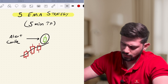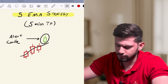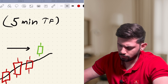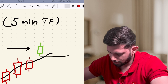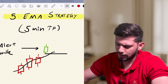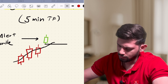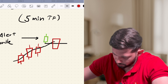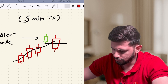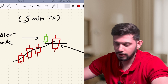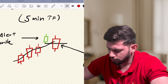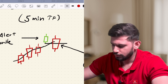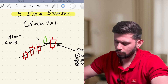Any time the low of this alert candle is broken, we will take an entry. For example, the low of this candle is over here. Once the low of the candle is broken, we will take our entry. You can either sell a call, buy a put, or sell a future — simple enough. Now the target and stop loss will be defined as follows.